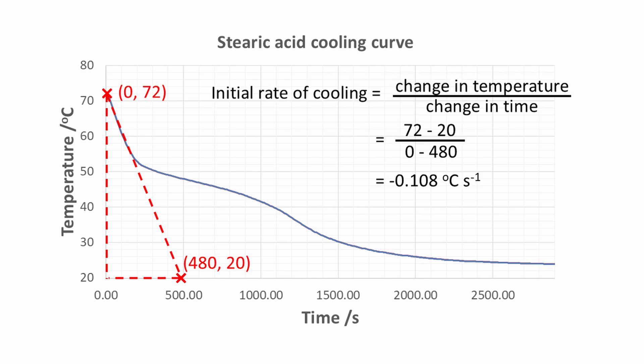The initial rate of cooling is found by change in temperature divided by change in time. This works out to be minus 0.108 degrees Celsius per second. Units are essential. Every second, the substance cools by 0.108 degrees Celsius. The minus sign tells us that the substance is cooling down.